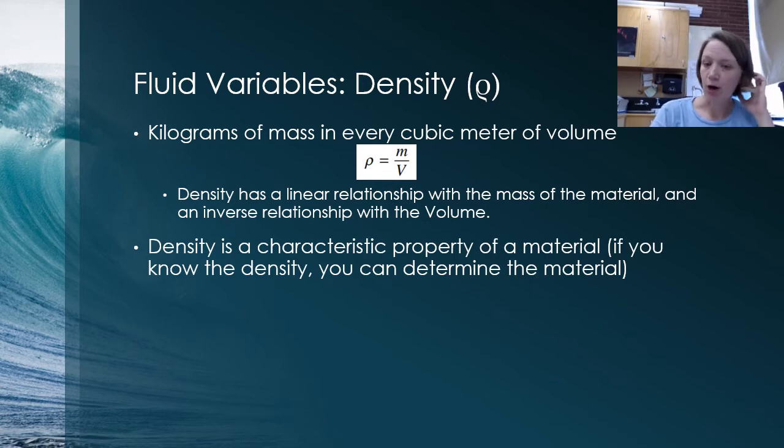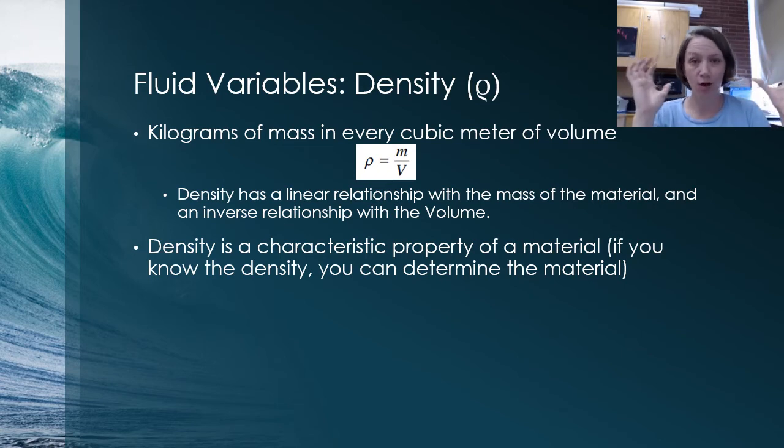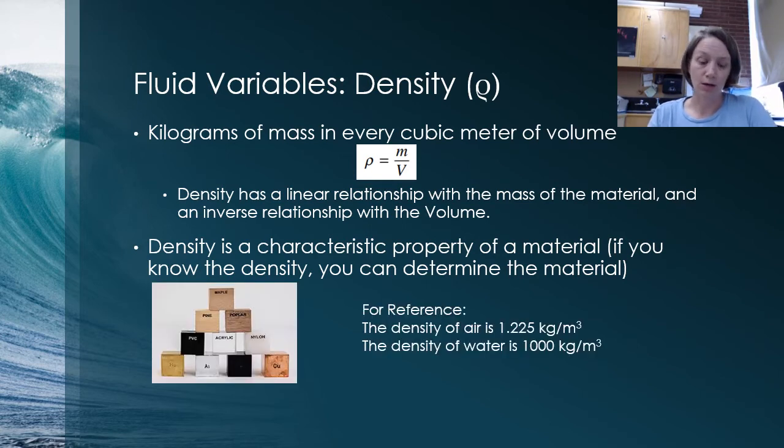Density is a characteristic property of a material. That means that all common materials have typically a known density value. And often if you have an unknown material, but you can figure out the density, you can reference a table to figure out what material you're talking about. So all of those materials have their own unique densities. For reference, the density of air is 1.225 kilograms per meter cubed. So if I had a meter cubed of air, that would have about a kilogram of mass, which is actually kind of a lot. Remember a kilogram is the mass of a pineapple. So a whole pineapple worth of air molecules are in a meter cubed.